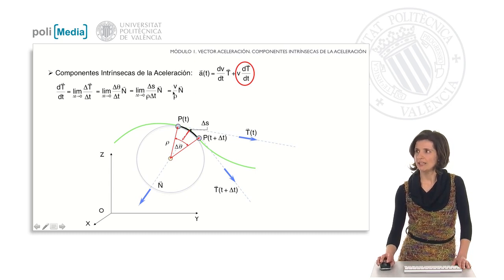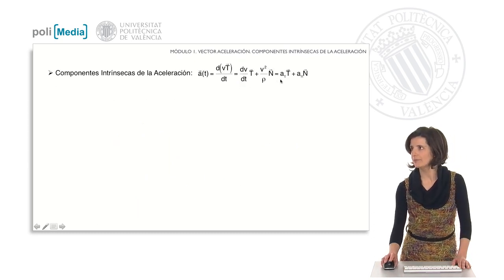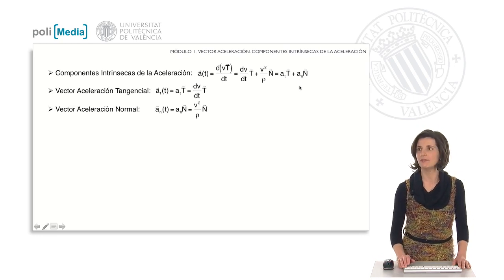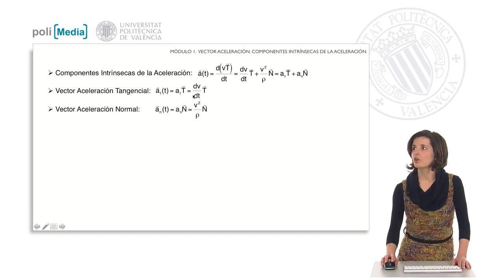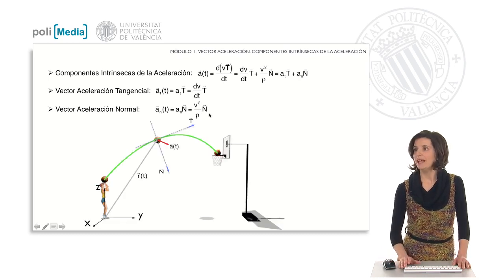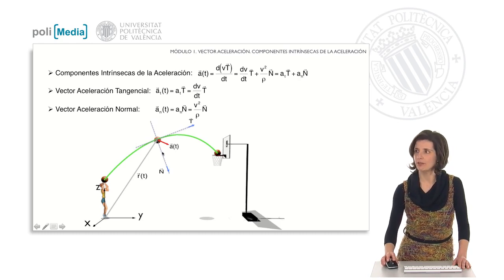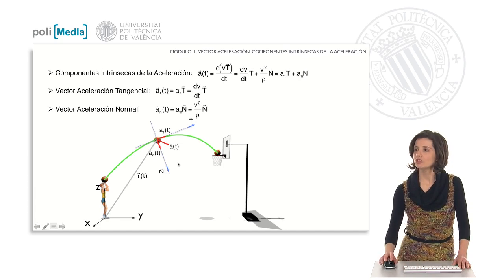Therefore, substituting this result into the expression of the acceleration vector, we obtain the intrinsic components: tangential acceleration a_t and normal acceleration. The tangential acceleration vector is the derivative of the velocity modulus with respect to time multiplied by the unit vector t. The normal acceleration vector is the velocity modulus squared divided by the radius of curvature ρ, times the unit vector n. The figure shows these vectors at a given position: the total acceleration vector, the tangential and normal directions of the trajectory, their unit vectors t and n, and the corresponding acceleration components.